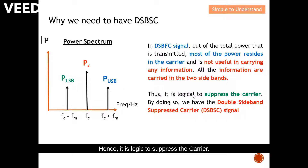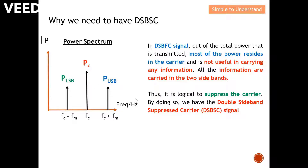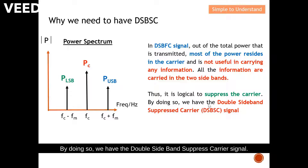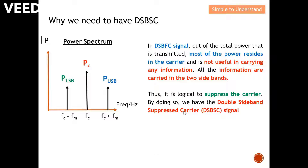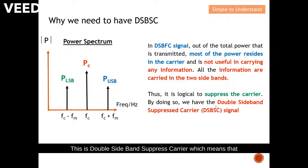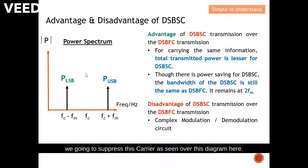Hence, it is logical to suppress the carrier, which means we don't transmit the carrier power. By doing so, we have the Double Sideband Suppressed Carrier signal. As seen in this diagram, we suppress the carrier, so we don't have the carrier component anymore.